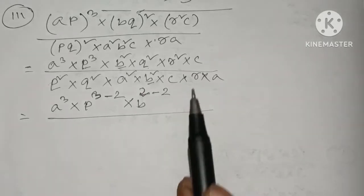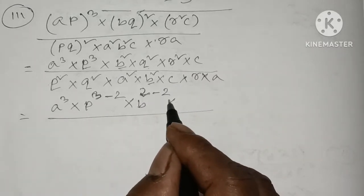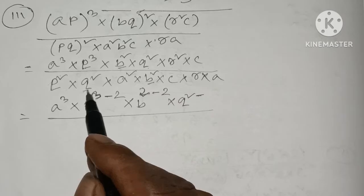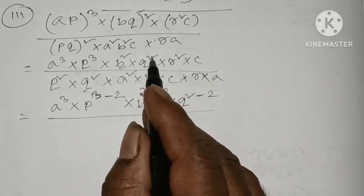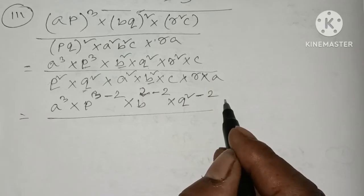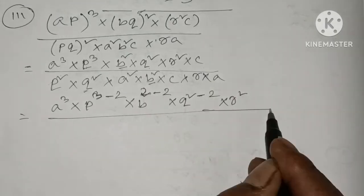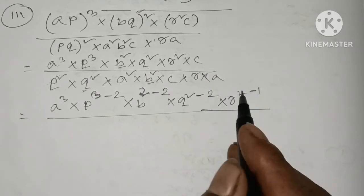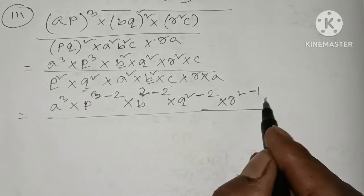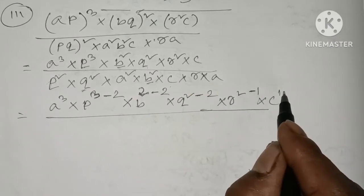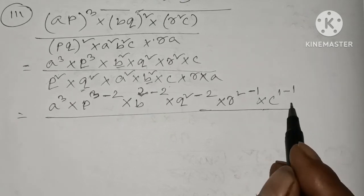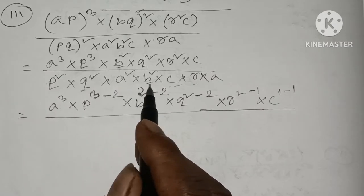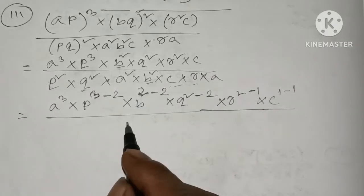I'll enter two together: k square into q square minus q is equal to q square, and minus two is equal to 2 minus 2. So 2 minus q is equal to 1 and c; this is c and c. So c is 1 minus 1, that is c². So the first one is c, r, b, b, q, and the first one is a, so a is a.